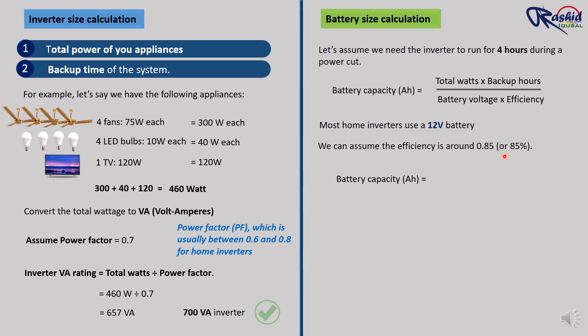So let's plug in the values. Battery capacity equals 460 watts multiplied by 4 hours, divided by 12 volts multiplied by 0.85. After multiplication it becomes 1840 divided by 10.2. After dividing this value we get 180.39 Ah. This is the battery capacity which we require.